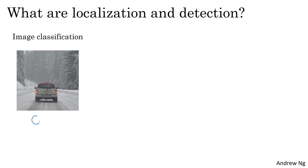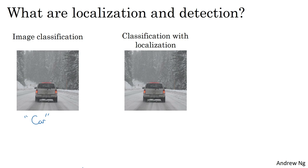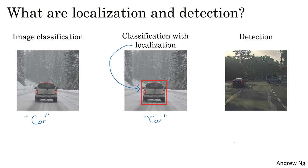You're already familiar with the image classification task, where an algorithm looks at a picture and might be responsible for saying this is a car. The problem you'll learn to build a neural network to address is classification with localization, which means not only do you have to label this as a car, but the algorithm also is responsible for putting a bounding box or drawing a red rectangle around the position of the car in the image. That's called the classification with localization problem, where the term localization refers to figuring out where in the picture is the car you've detected.